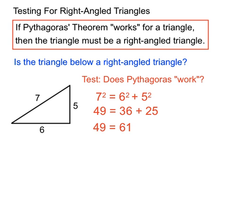And we get there a result of 49 equals 61. Now, I'm not sure what your maths is like, but I'm pretty sure 49 doesn't equal 61. So we could say that left hand side doesn't equal the right hand side. It's a false mathematical statement.